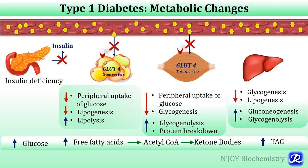Because of increased lipolysis due to unopposed action of hormone-sensitive lipase — which is normally inhibited by insulin — there is degradation of triacylglycerol into fatty acids and glycerol, leading to increased fatty acid concentration. These fatty acids are further oxidized by beta oxidation, resulting in formation of acetyl-CoA, and the increased acetyl-CoA pool leads to ketone body production. So type 1 diabetes is characterized by increased glucose, increased free fatty acids, increased ketone bodies, and increased triglycerides.